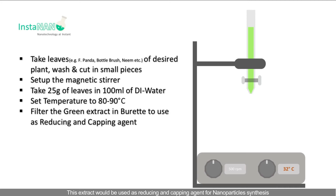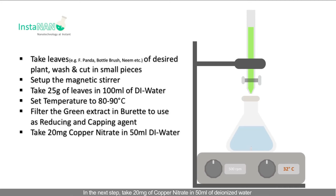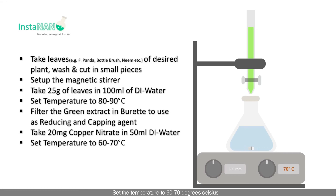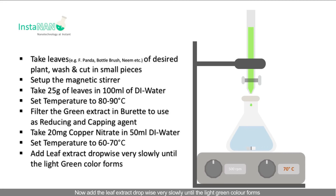In the next step, take 20 mg of copper nitrate in 50 ml of deionized water. Set the temperature to 60 to 70 degrees Celsius. Now add the leaf extract dropwise, very slowly.